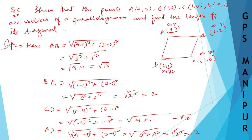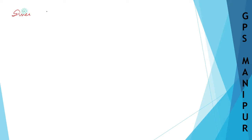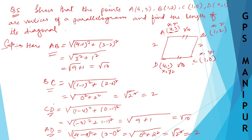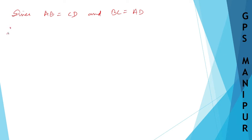I hope you don't find it too difficult. Now we can see that AB and CD are equal, and BC and AD are equal. AB is root 10, CD is also root 10, BC is 2, and AD is 2 — opposite sides are equal. Therefore, since AB equals CD and BC equals AD, the points are vertices of a parallelogram.